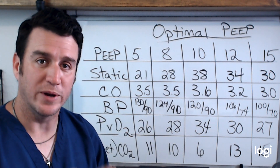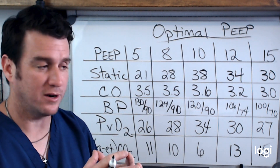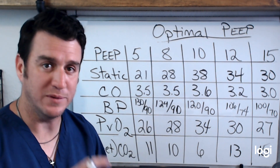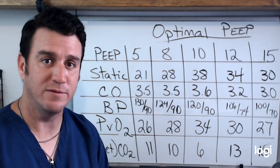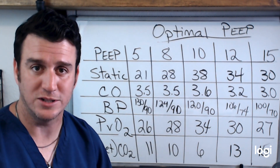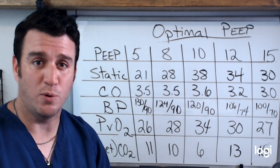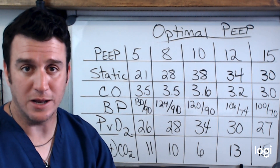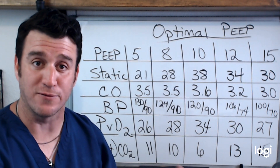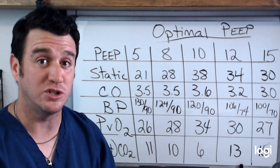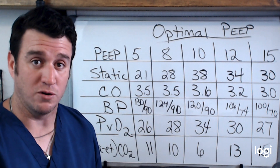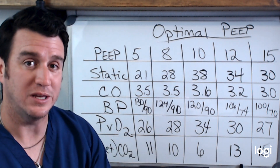Hey future respiratory therapists, here we go — part three of our series talking about the benefits of PEEP and how they can affect your oxygenation. If you missed part one and part two, go back and watch them. In part one we pointed out how a PAO2 of 60 on 80% versus 40% FiO2 is not the same thing — we have a greater A-a difference, a worse PF ratio, and we're not as effectively oxygenating our patient with a higher FiO2 and lower PEEP.